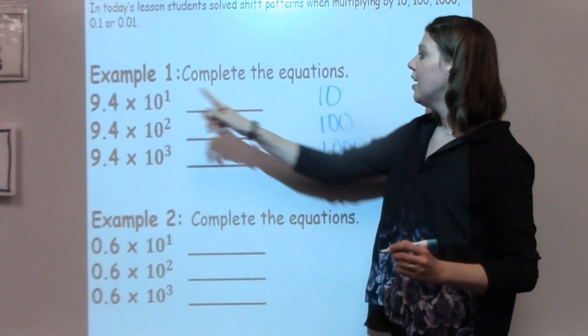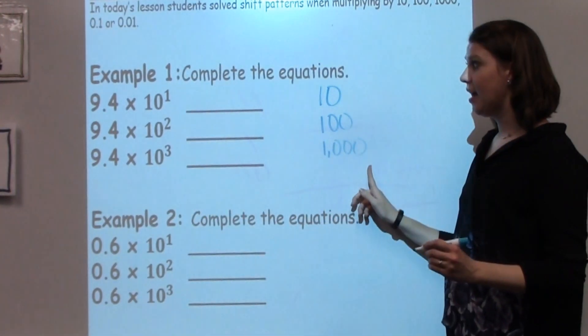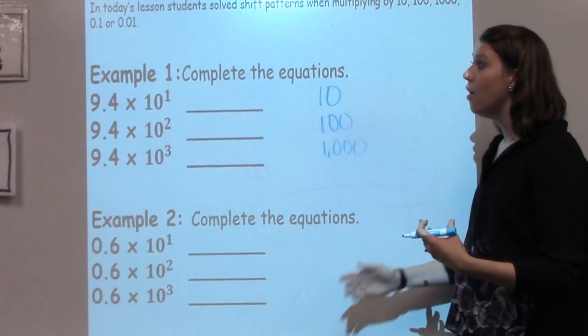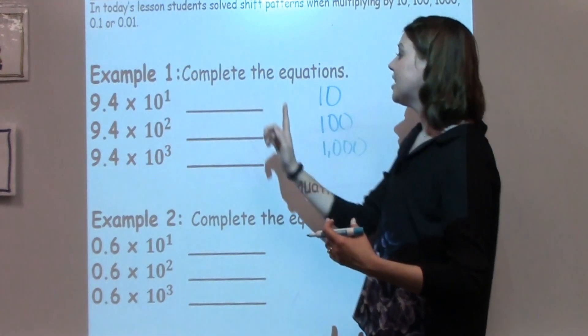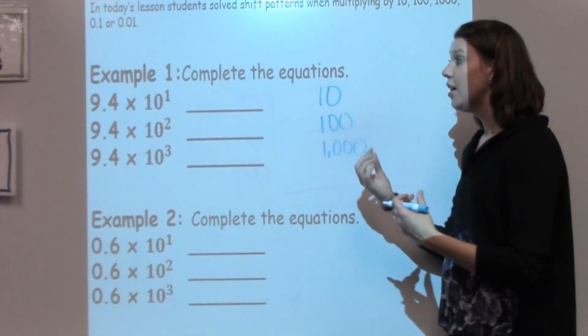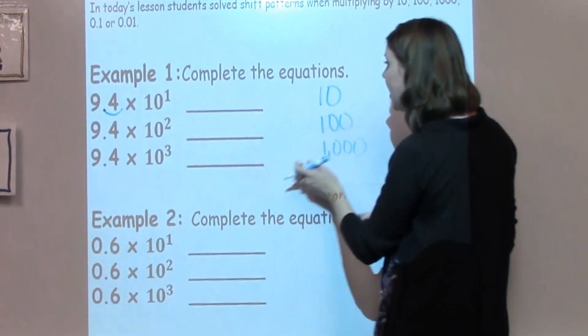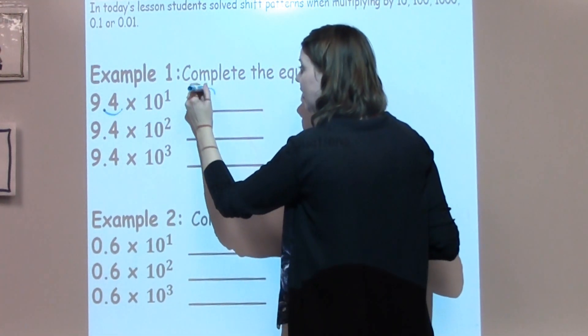If you notice, this 1 also correlates to how many zeros my problem has. Now to complete this equation, we need to think about 9.4 times 10 to the first power, which is the same as 10. Which means we're going to shift our number just one spot over here, because if we take a times 10, it's going to shift it once to the right, which gives us an answer of just 94.